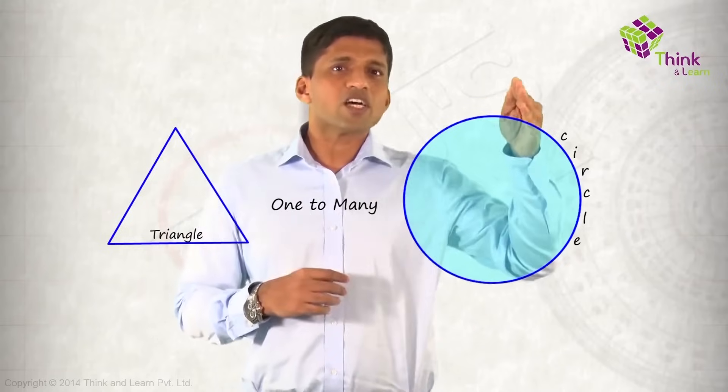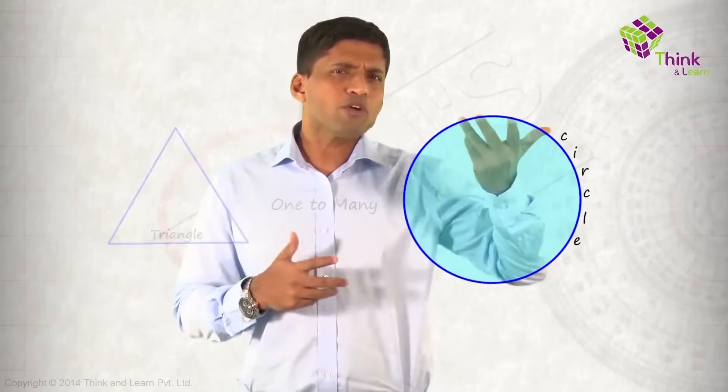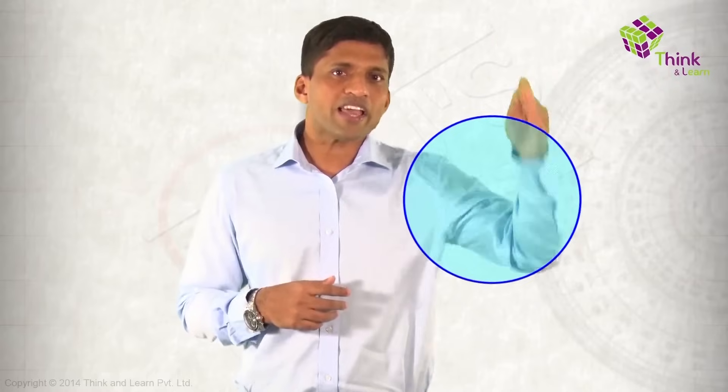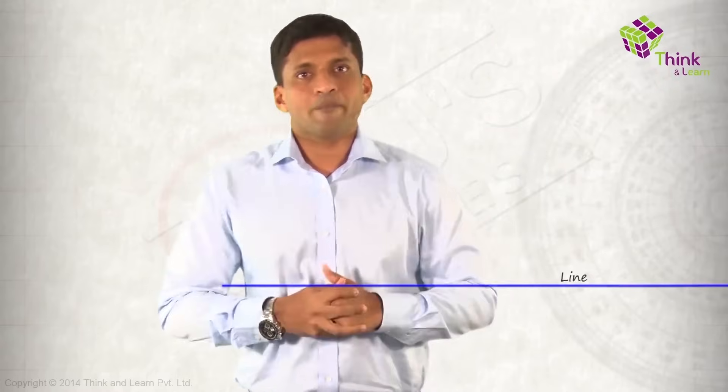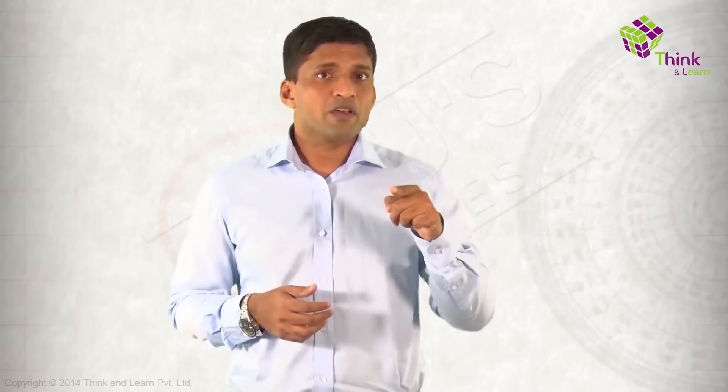Now, the same circle — just to make you think further — if I cut it and straighten it out, I get a line, and that's where we started from. So a line can be taken as a circle with infinite radius, if you stretch your imagination. And a circle can be taken as a polygon with infinite lines or infinite sides.